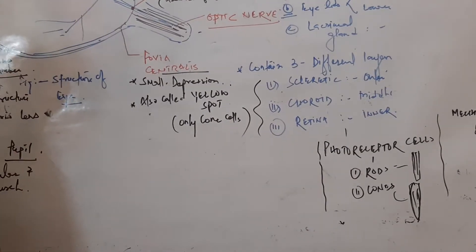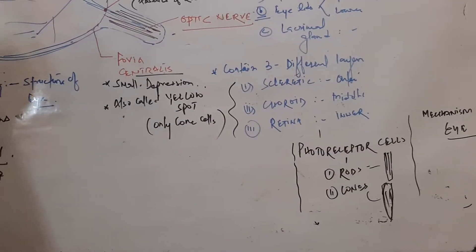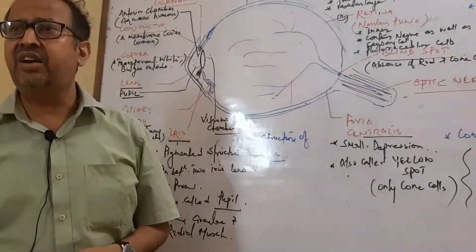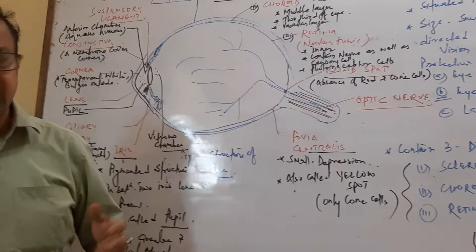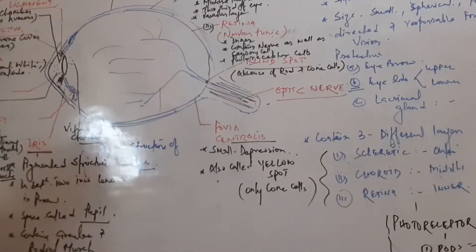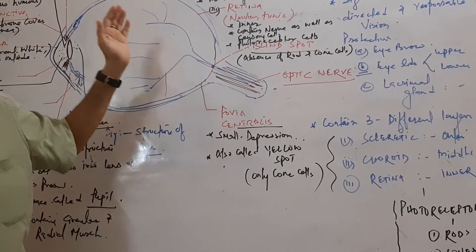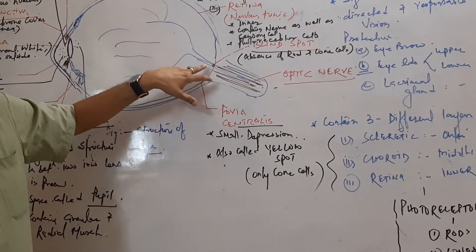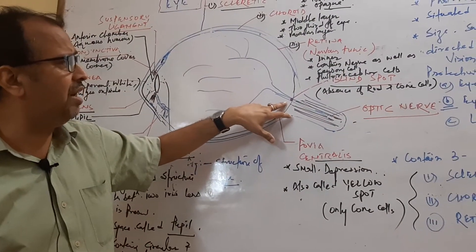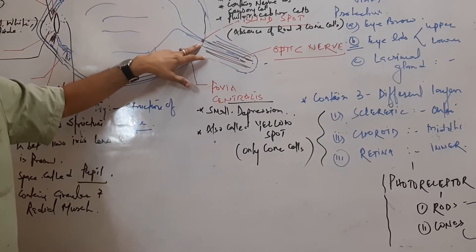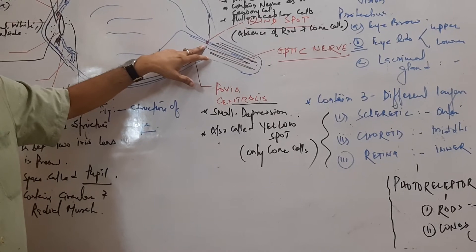Rod cells have a rod structure, cone cells have a cone structure, which are responsible for day and night vision. The area where nerves start is called the blind spot, where both rods and cone cells are absent.